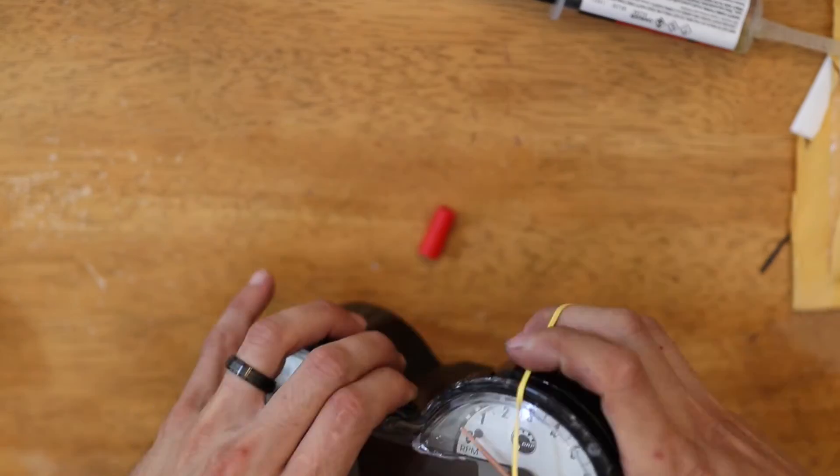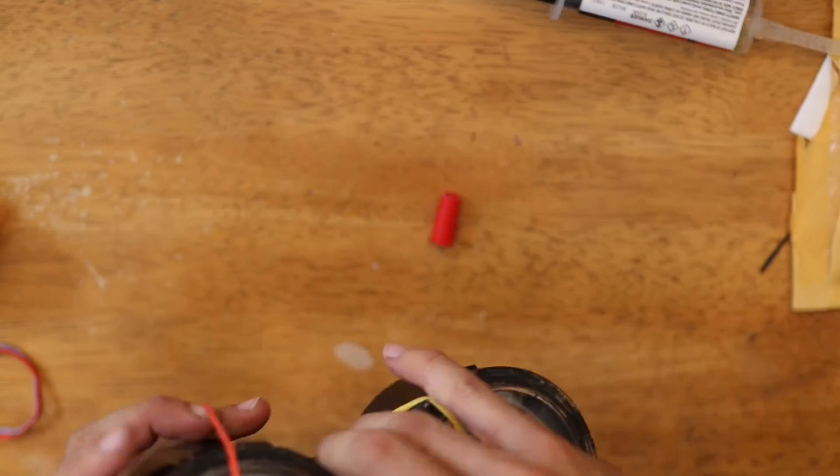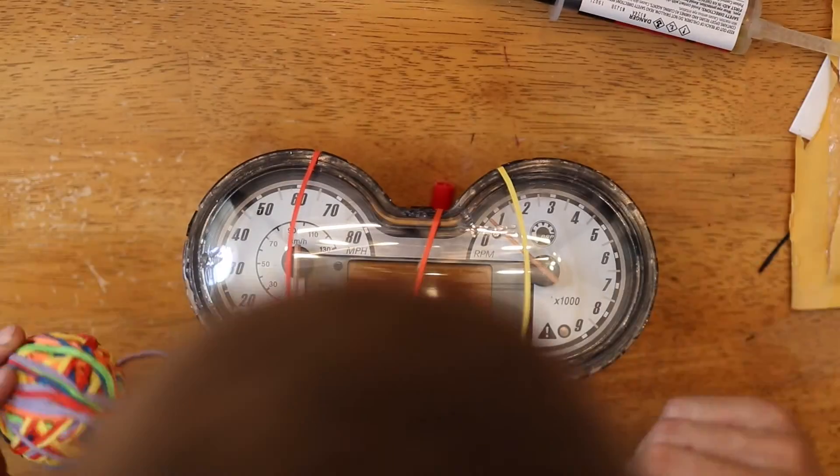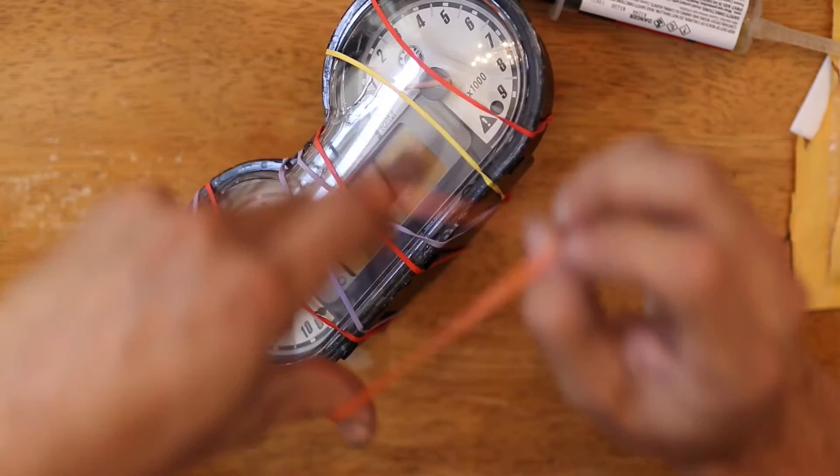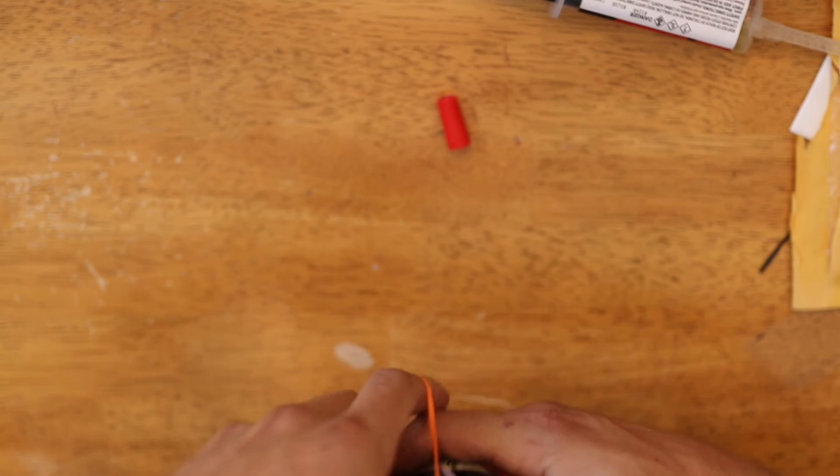After I put this on, I simply added some rubber bands to hold it in place while the epoxy cured and that's it. Now I can easily read my display again and it costs substantially less than the $800 the dealer quoted me for a new gauge cluster. If you have any questions, drop them in the comments below. I'll do my best to answer it. See you guys.